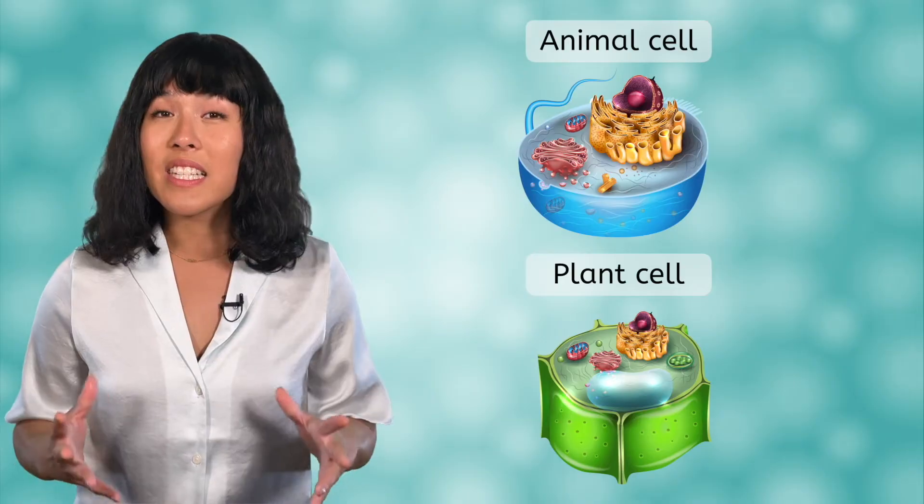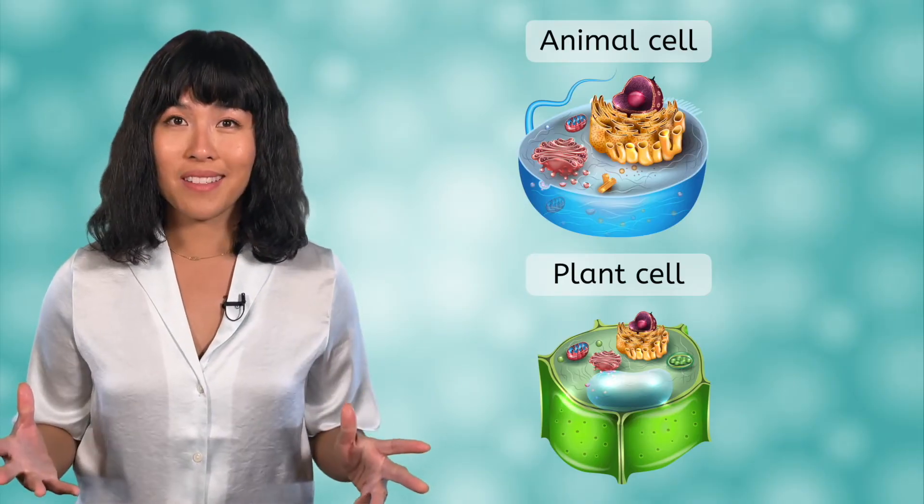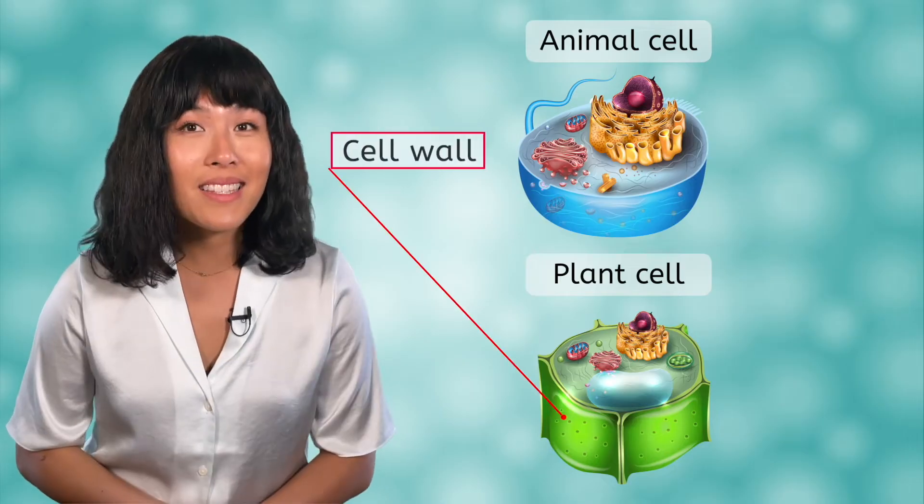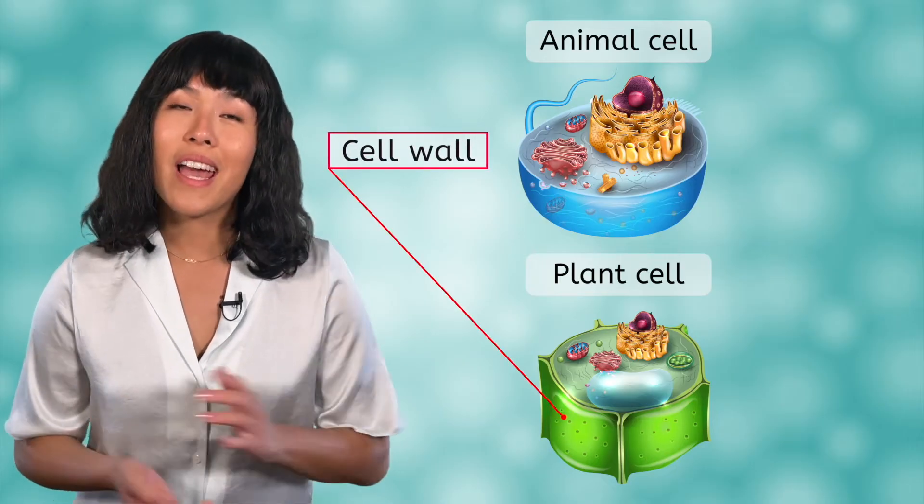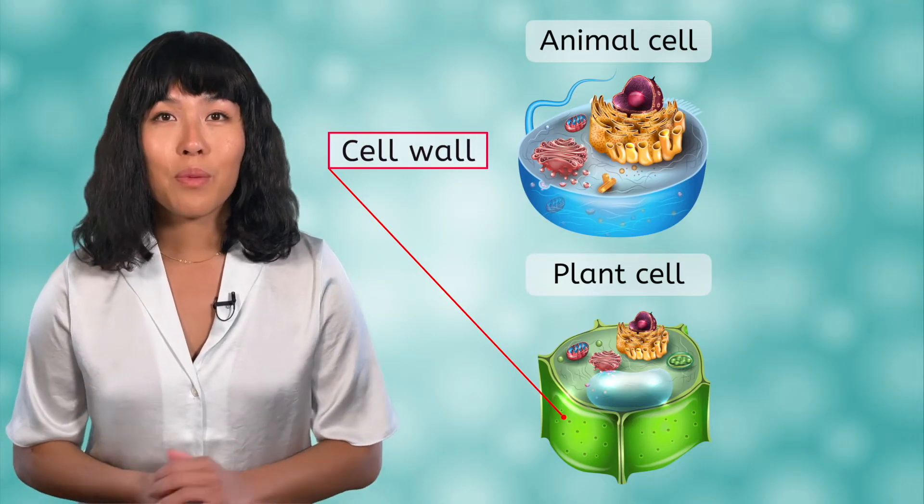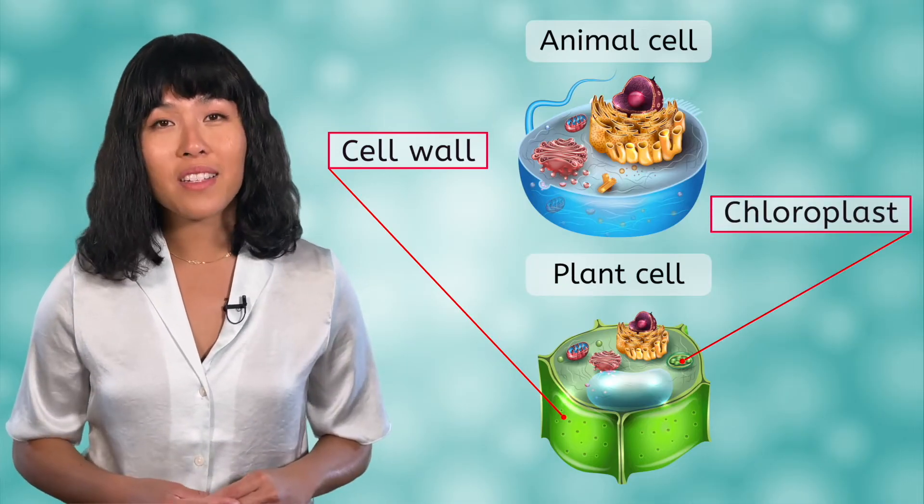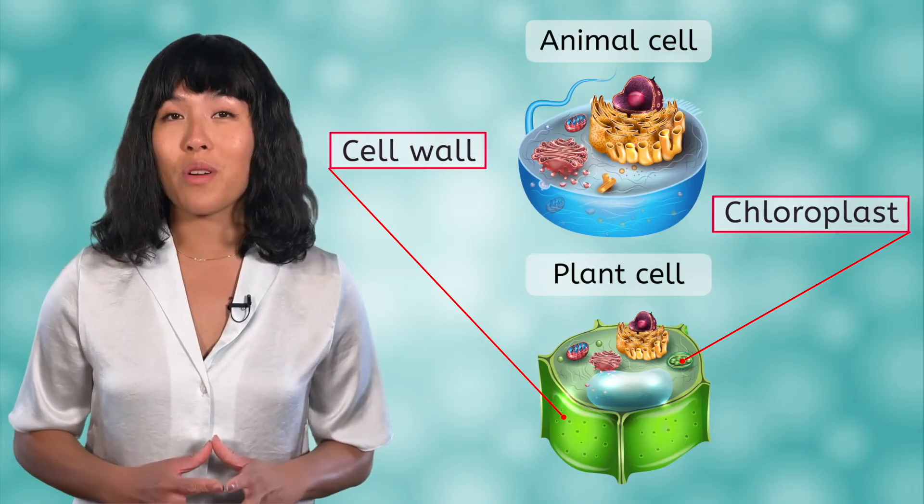When we studied cells a few units back, we looked at the difference between plant and animal cells. Do you remember any of the differences? Plant cells have a cell wall. Animal cells do not. Plant cells also have chloroplasts, while animal cells do not. Those are the most important differences.